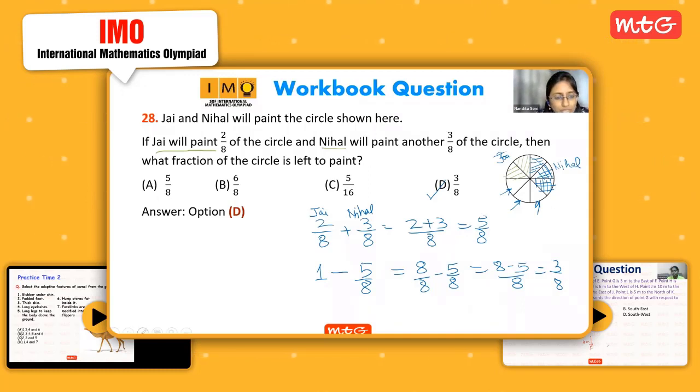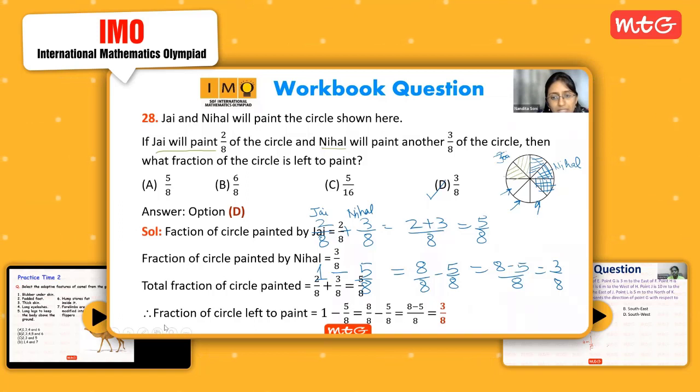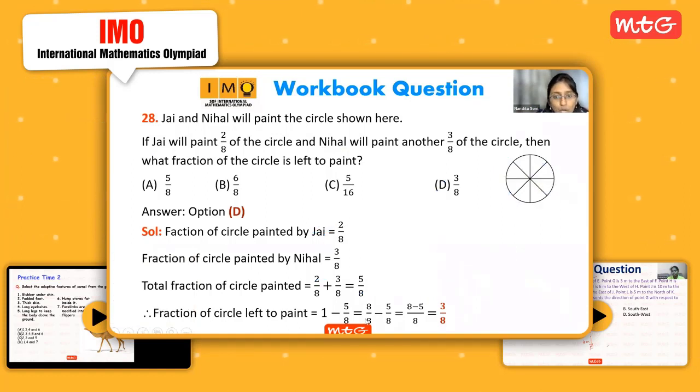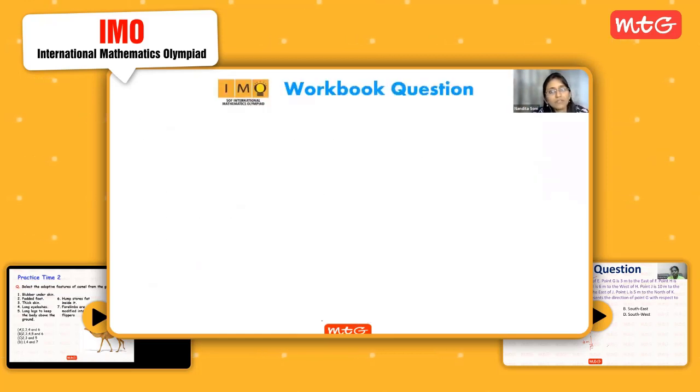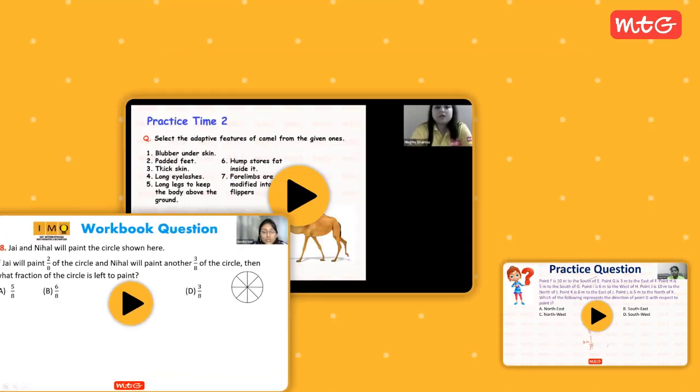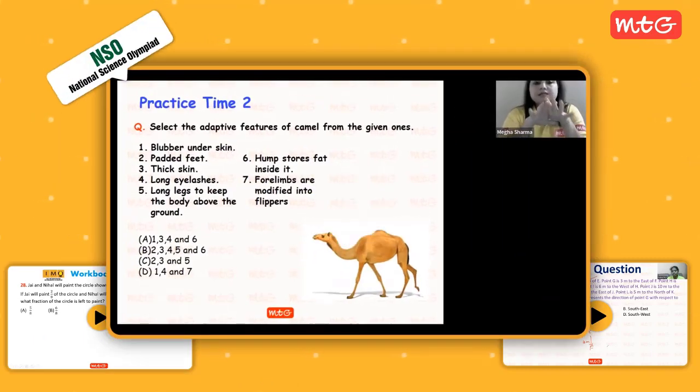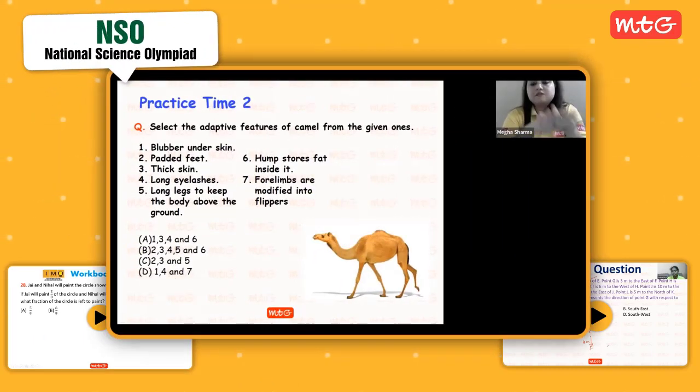Here the picture was given, so we thought of doing it visually—it's much easier. Both ways are correct. The mathematical part is given because at times pictures are not given, or if the fractions are too big that we can't draw. Whenever 'left' is asked, from a whole you have to subtract. One minus 5/8—this is an important step. There are seven adaptive features given on your screen. You have to select correct sets of features for a camel.